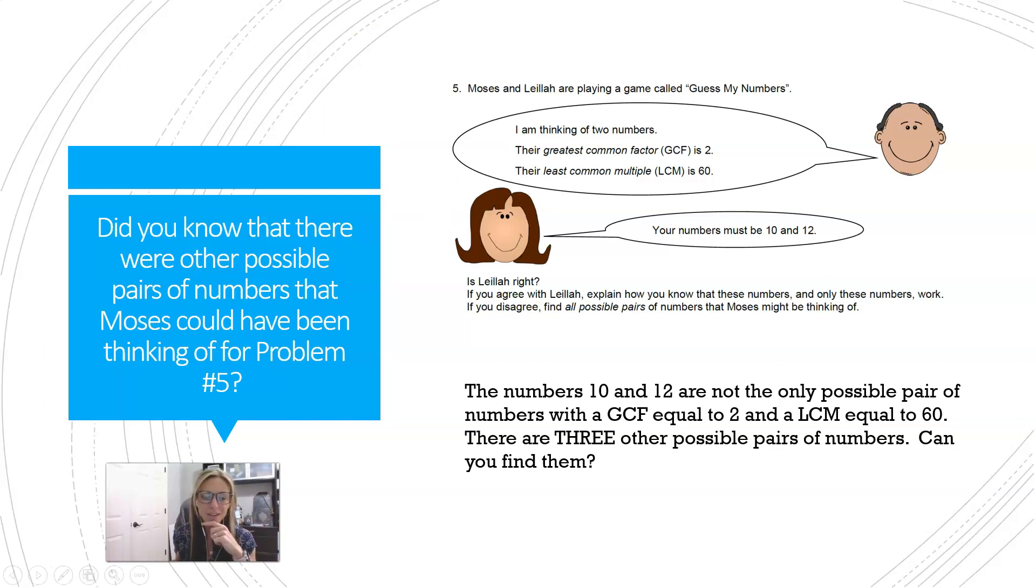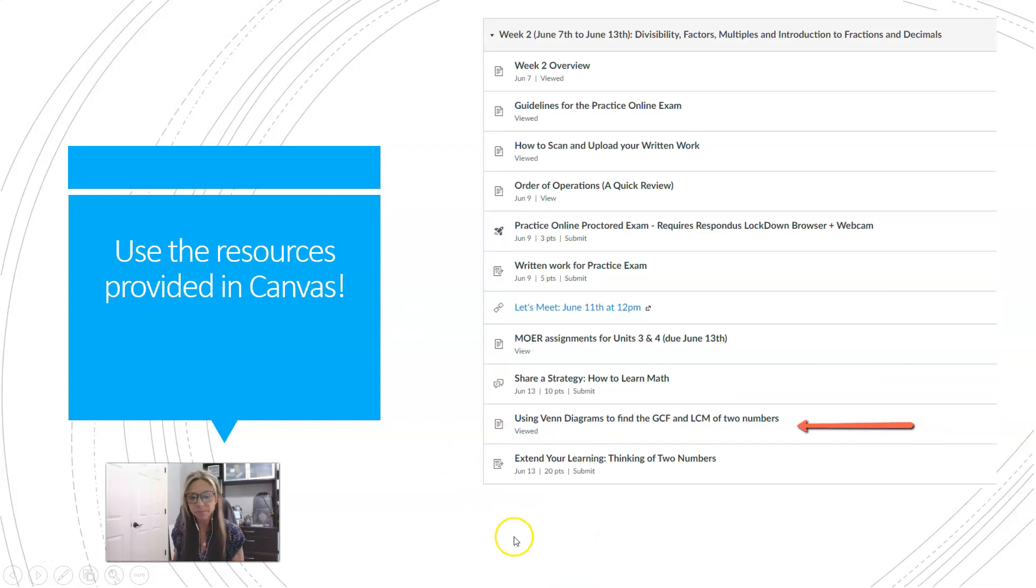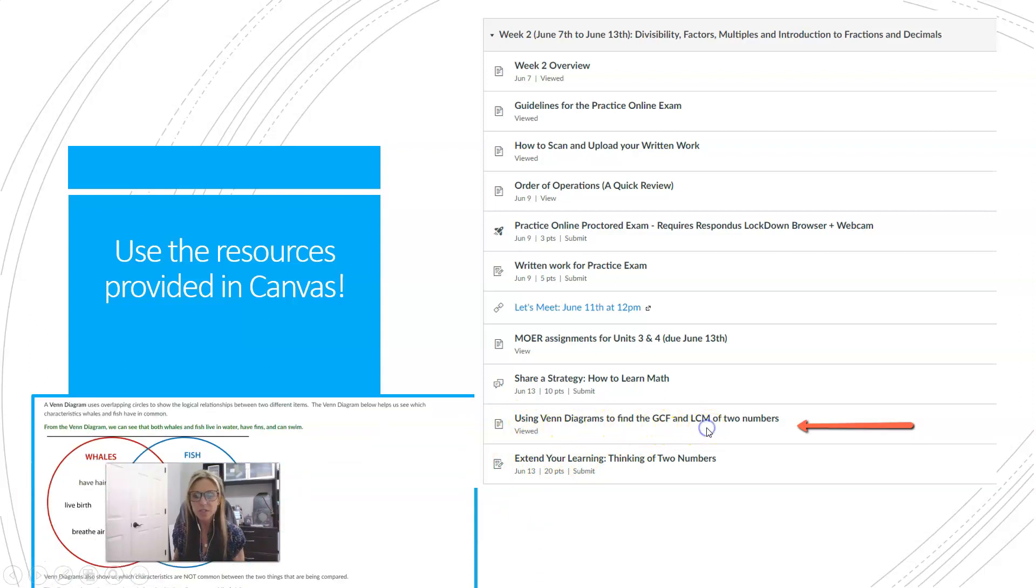One more thing I just want to make sure: use the resources in Canvas. For each extend your learning assignment, you can see here is the assignment, but right before it in the module you see there's a content page called Using Venn Diagrams to Find the GCF and LCM of Two Numbers.